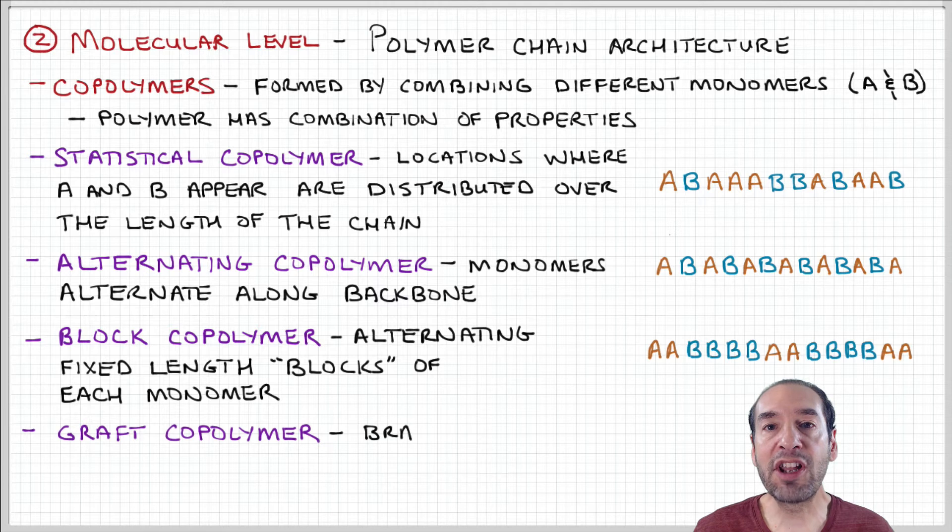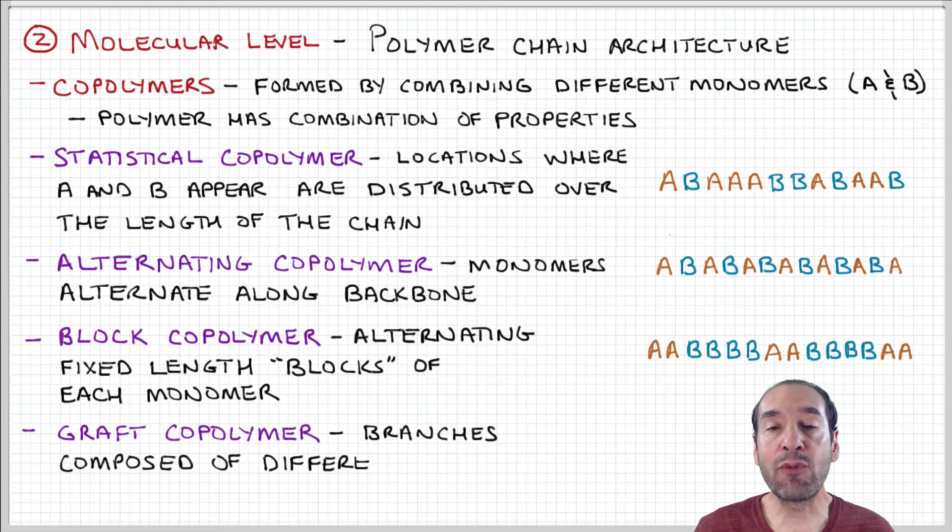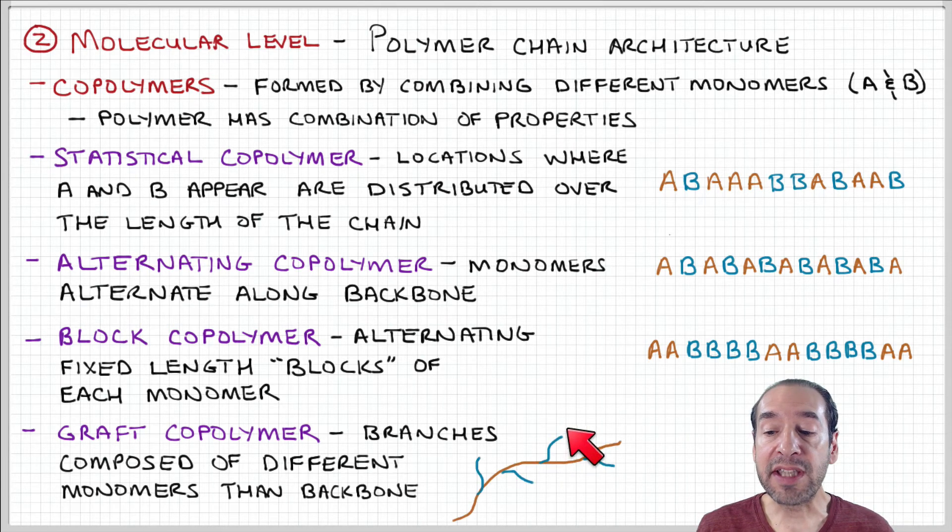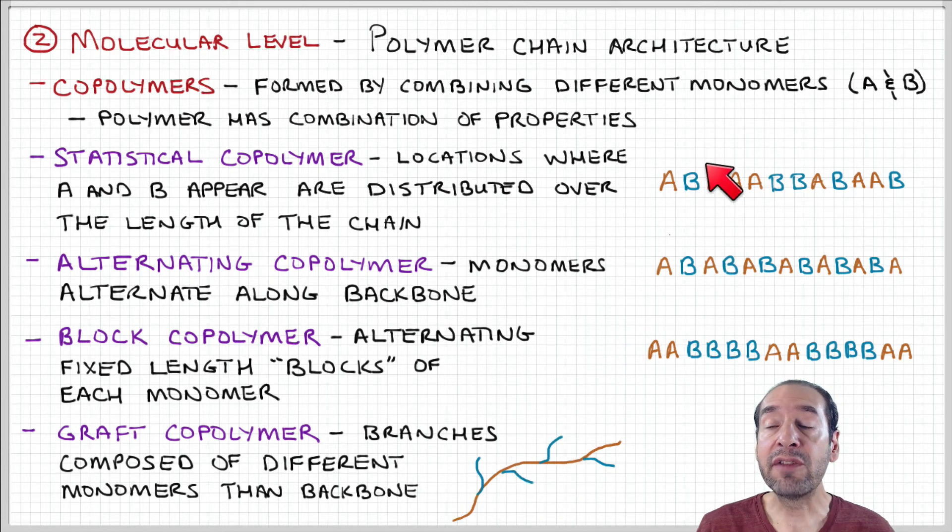A graft copolymer is another example of a structure where you have one monomer species on the backbone and another monomer species that composes the branches. You might have the A blocks all along the backbone and then the B blocks along the branches. You can imagine that depending on these different architectures, those will give you different combinations of the properties associated with these individual monomer units.